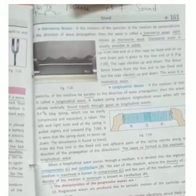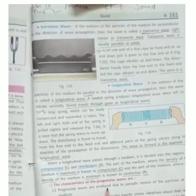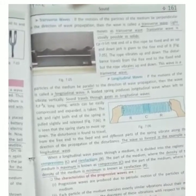The next topic is the characteristic of propagation of wave. Number 1: Propagation wave produced due to periodic motion. Each particle of the medium executes exactly similar vibration about their mean position. Number 3: Depending on the density and elasticity of the medium, wave moves in with a particular velocity.